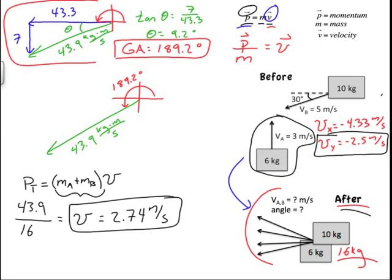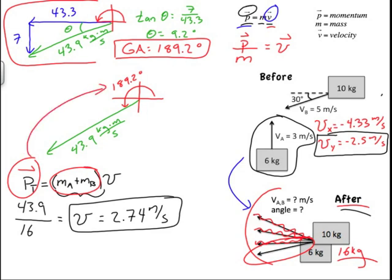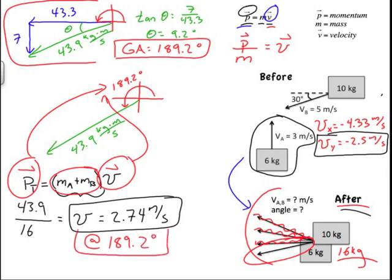The best representation is a third-quadrant vector, since the masses are scalars and cannot alter the direction of the momentum vector. So the velocity vector must be described by the same angle as the momentum vector. The velocity of the combined system is 2.74 meters per second at 189.2 degrees.